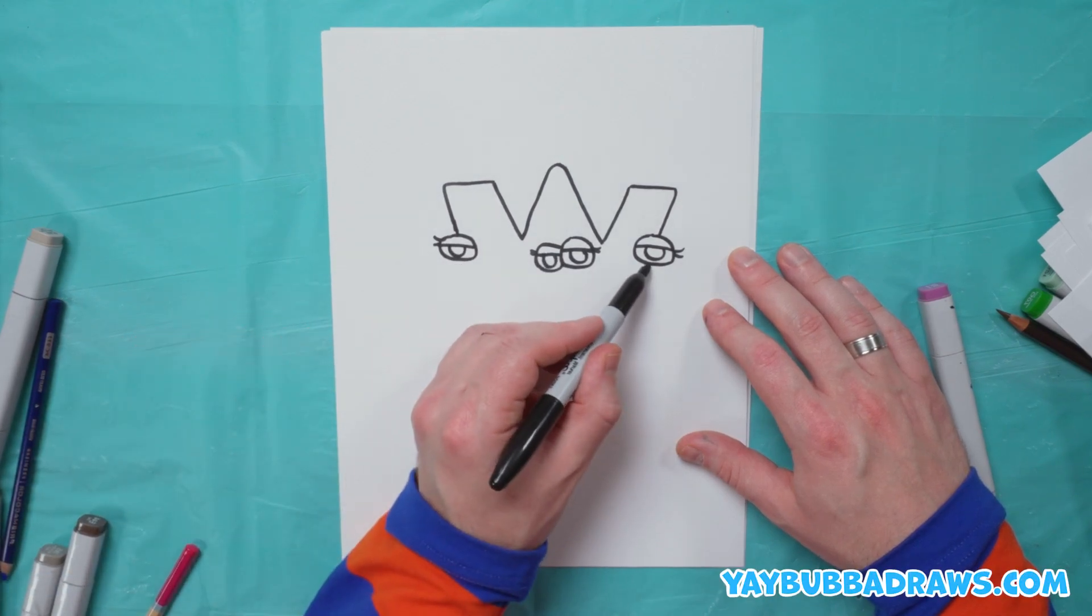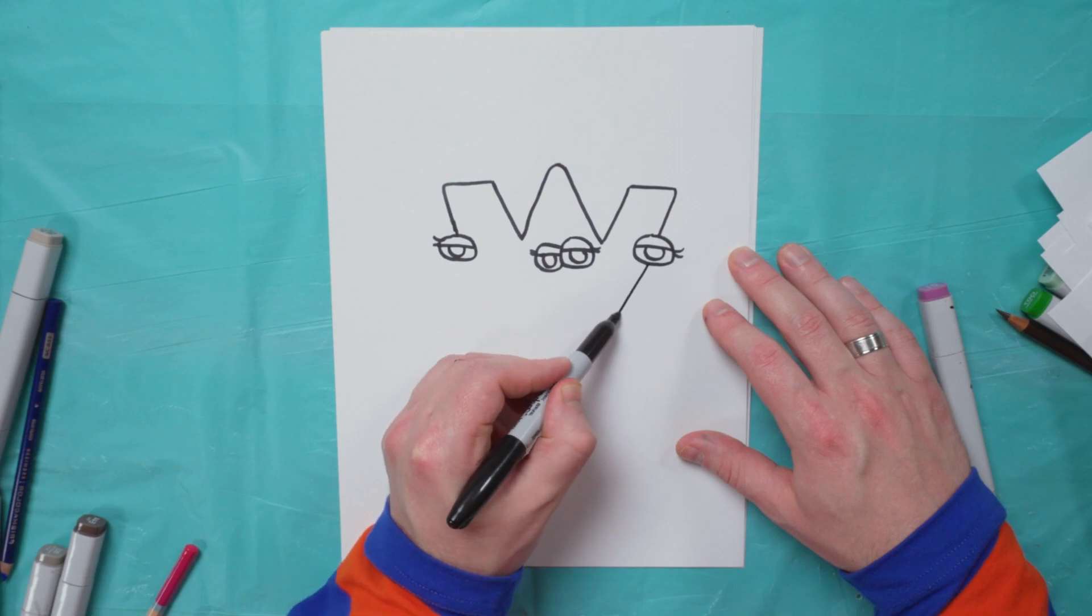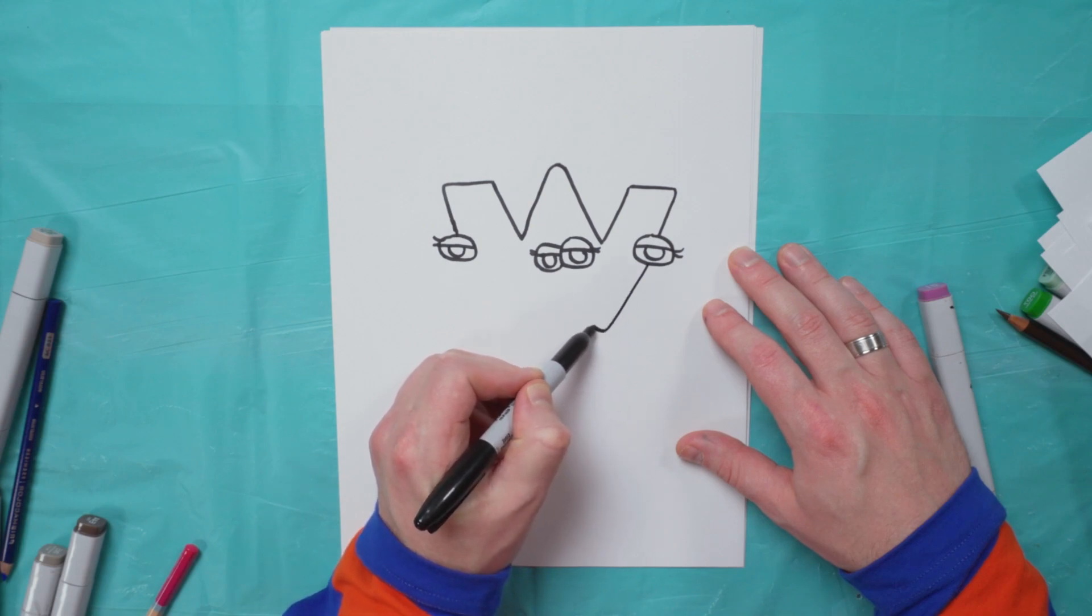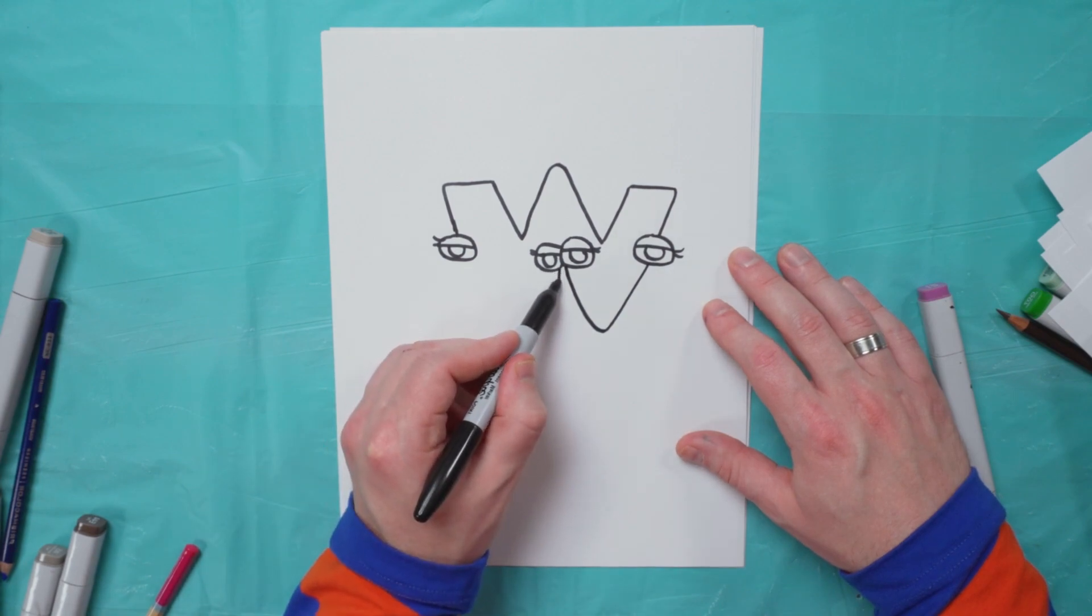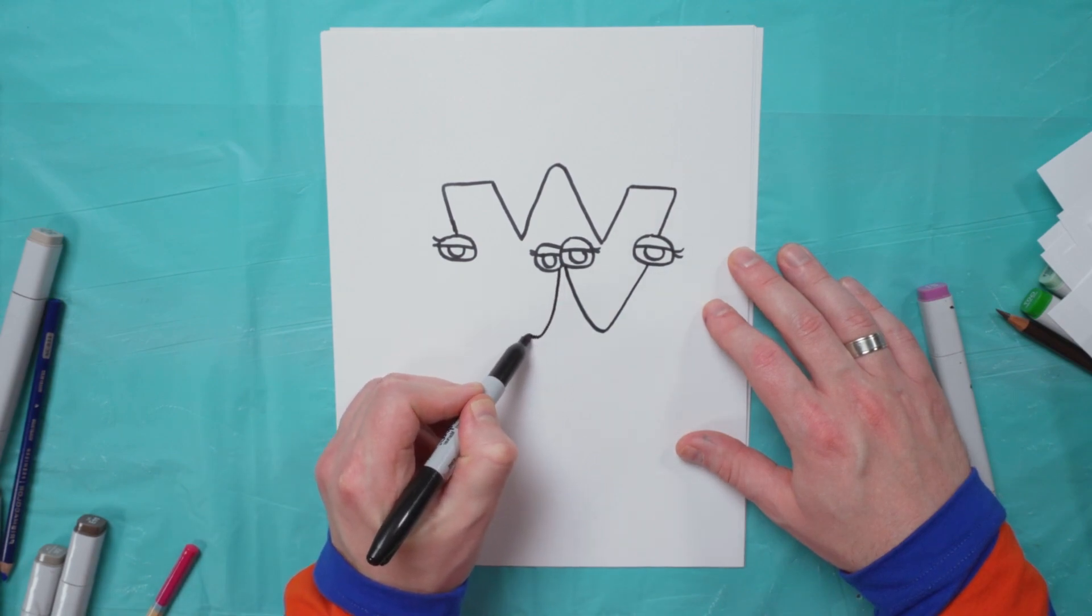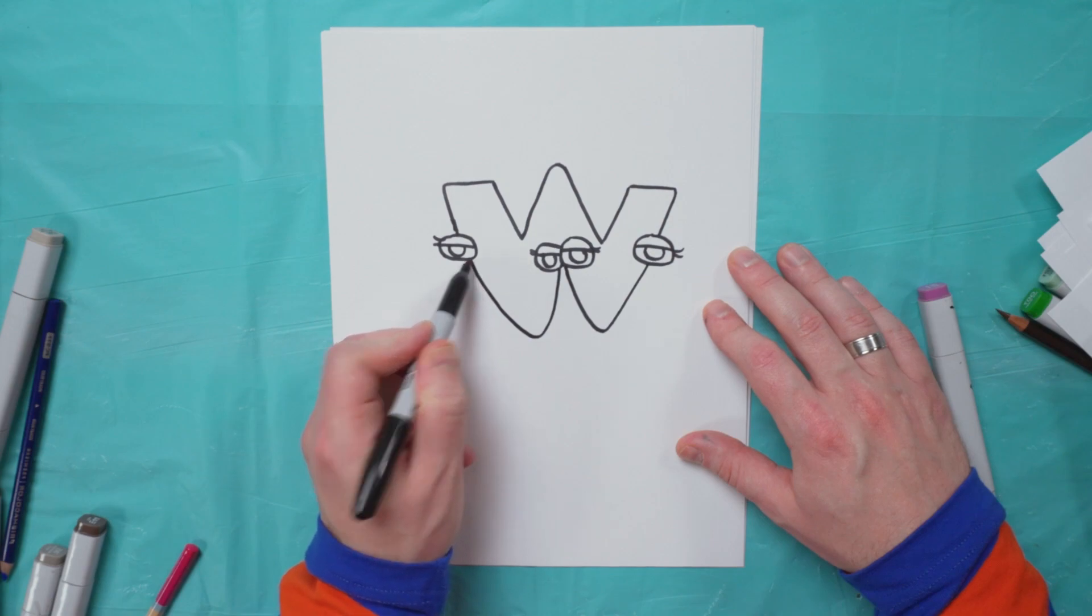Okay, now we're going to finish off the body. We'll come down through here, curve and go up, end right there. We'll do the same thing on this side. We'll come down, we'll curve up, we'll end right there.